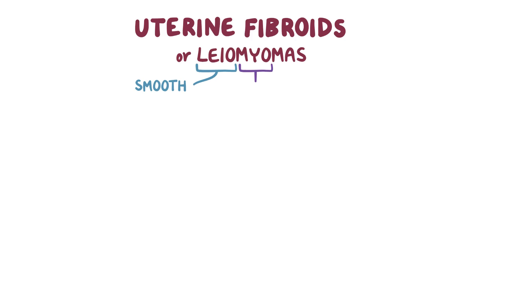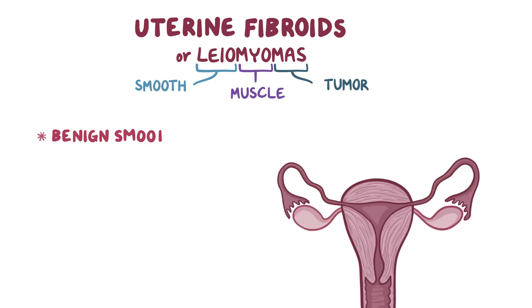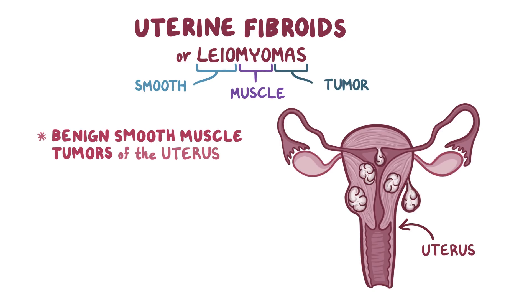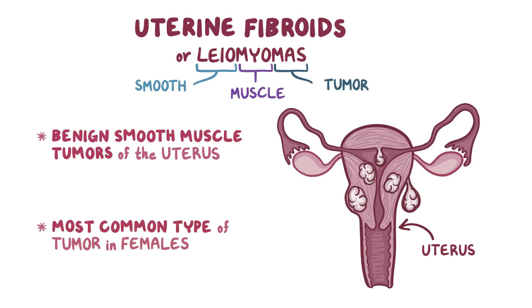Uterine fibroids are also called leiomyomas. Leio means smooth, myo means muscle, and oma means tumor, so these are benign smooth muscle tumors of the uterus. In fact, fibroids are the most common type of tumor in females.